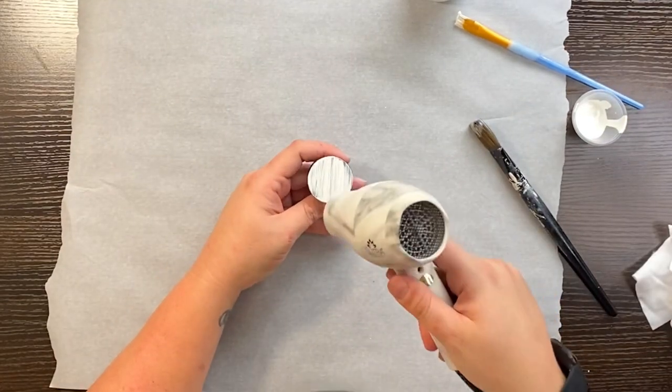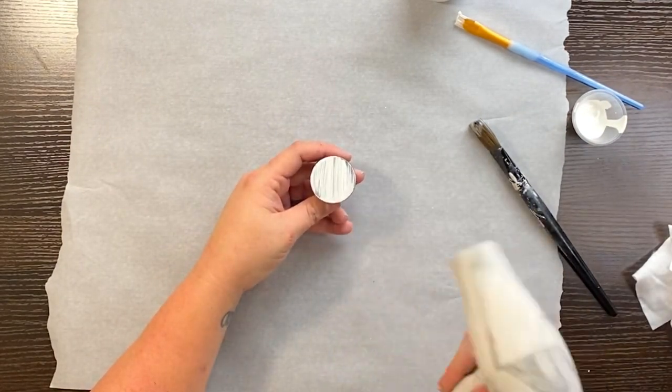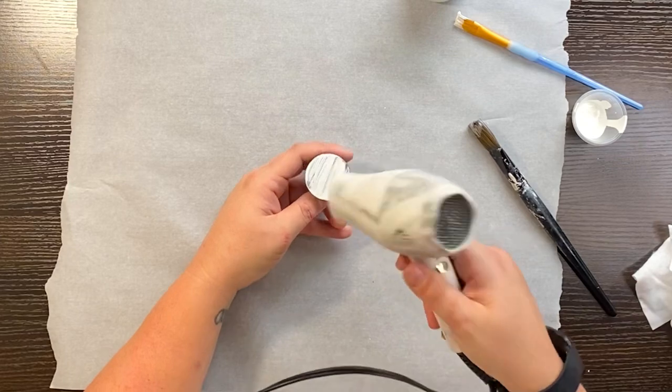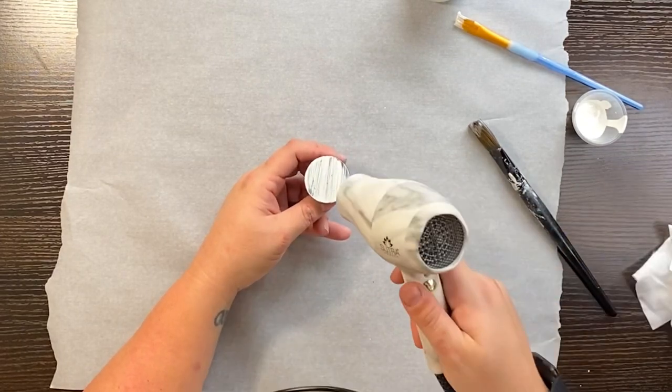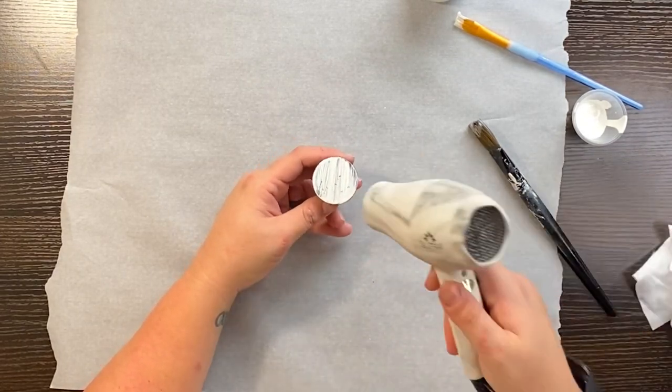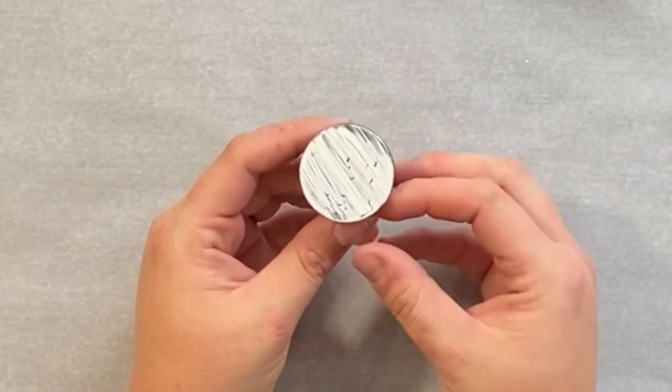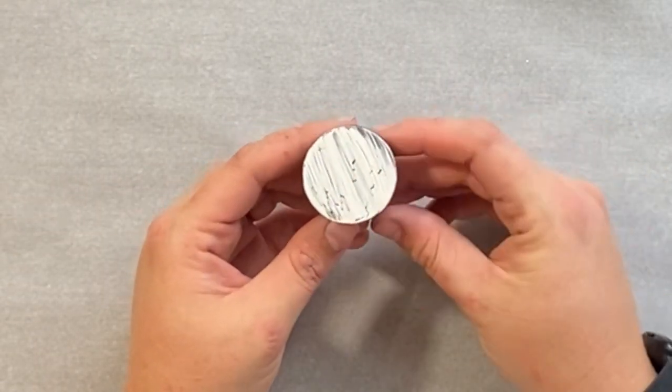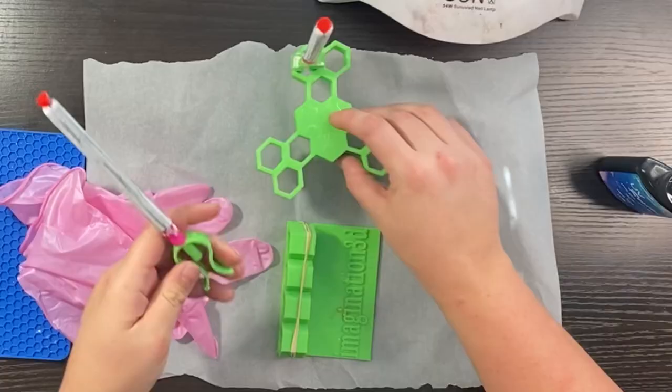You absolutely don't have to use heat to speed up the process. You can put these in front of a fan for a couple hours or just set them off to the side overnight. I'm impatient, so I add heat. But again, if you add too much heat, your paint can bubble up and it doesn't look right.